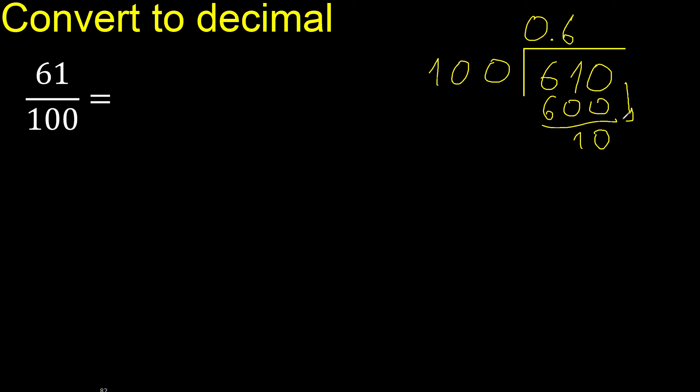There is no number that goes down, therefore complete — always complete with 0. Use the decimal point only once.